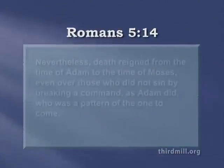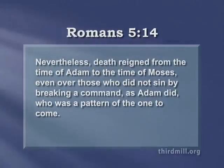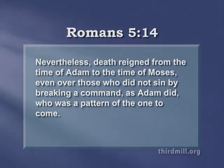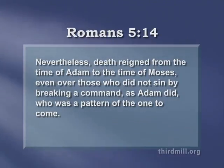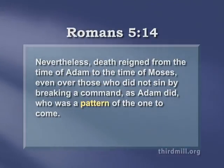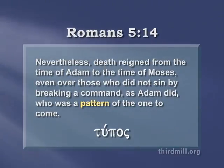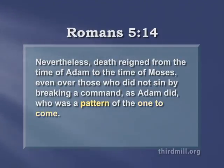For example, listen to what the apostle Paul said about Adam in Romans chapter 5 verse 14: Nevertheless, death reigned from the time of Adam to the time of Moses, even over those who did not sin by breaking a command as Adam did, who was a pattern of the one to come. Notice here that Paul declared Adam was a pattern of the one to come. The Greek word translated pattern here is toupos. From the larger context, we know that the one to come is Christ. So, in this case, Paul observed that Adam was a type of Christ.